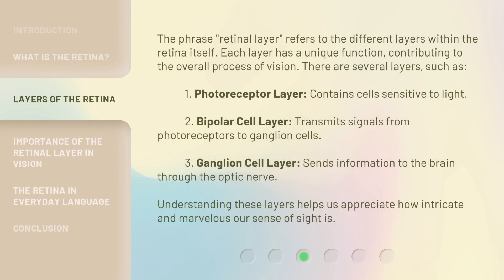The phrase 'retinal layer' refers to the different layers within the retina itself. Each layer has a unique function, contributing to the overall process of vision. There are several layers, such as: